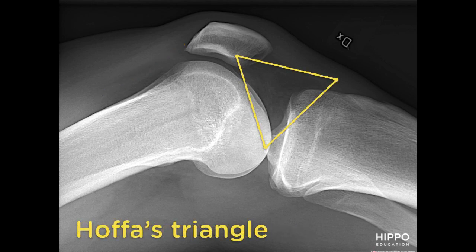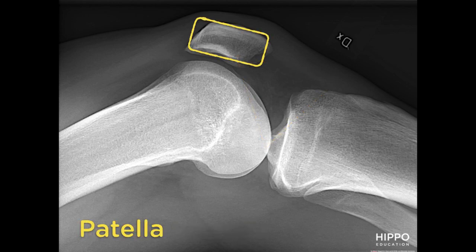Third, Hoffa's triangle — the area around the anterior femoral condyles — in a normal knee is radiolucent, or dark. Finally, in a normal knee x-ray, the patella is not anteriorly displaced.